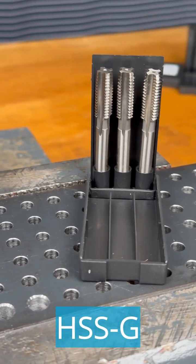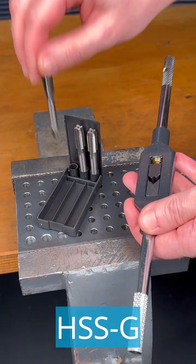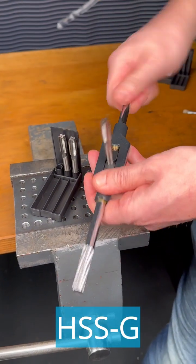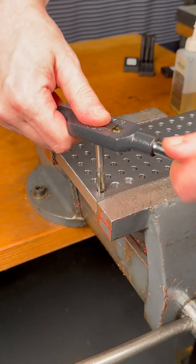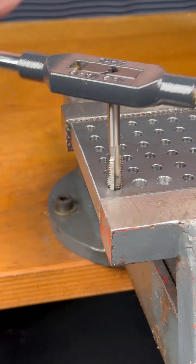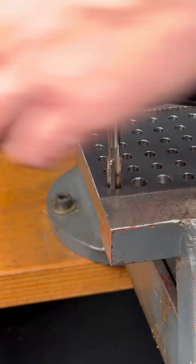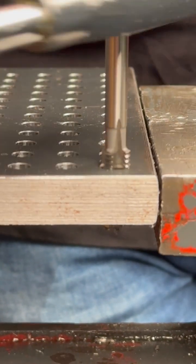Our HSSG hand taps are ideal for machining unalloyed to low-alloy standard structural steels, non-ferrous metals, or aluminum. The precisely ground cutting edges make tapping by hand much easier. Thanks to their high-quality, high-speed steel, they offer a long service life and optimum cutting results.